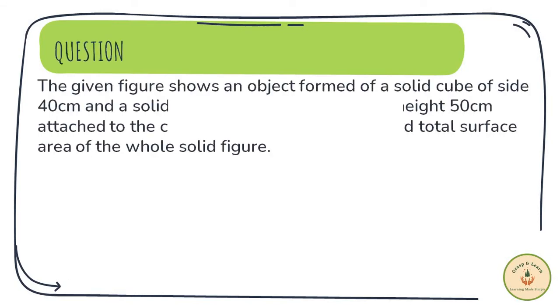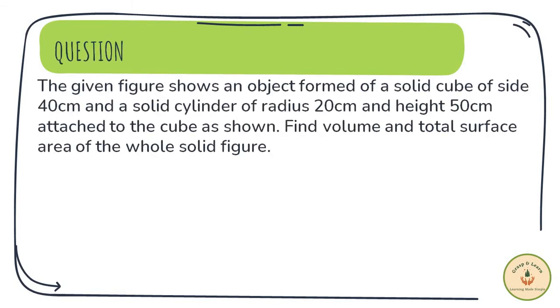Let's look at the question. The given figure shows an object formed of a solid cube of side 40 cm and a solid cylinder of radius 20 cm and height 50 cm attached to the cube as shown. Find the volume and total surface area of the whole solid figure.